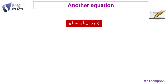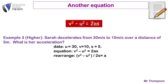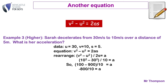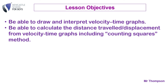Higher paper example: Sarah decelerates from 30 m/s to 10 m/s over a distance of 5 metres. What is the acceleration? Here u = 30, v = 10, s = 5. Using a = (v² − u²) / 2s gives (100 − 900) / 10 = −800 / 10 = −80 m/s². The minus sign means it's slowing down. If asked for the deceleration, the answer is +80 m/s² — that caught somebody out last week.